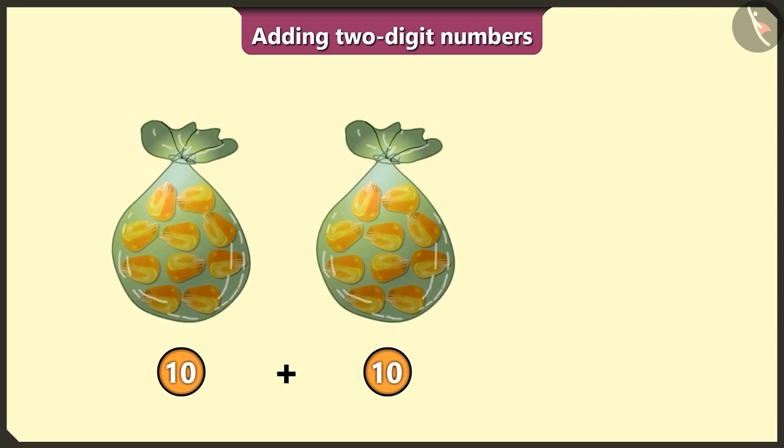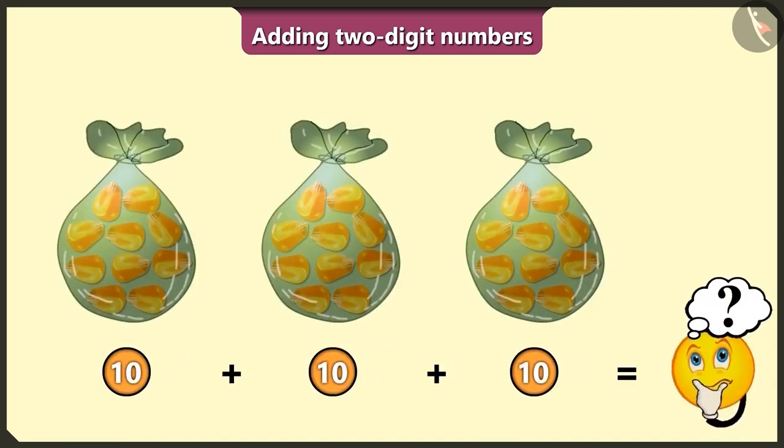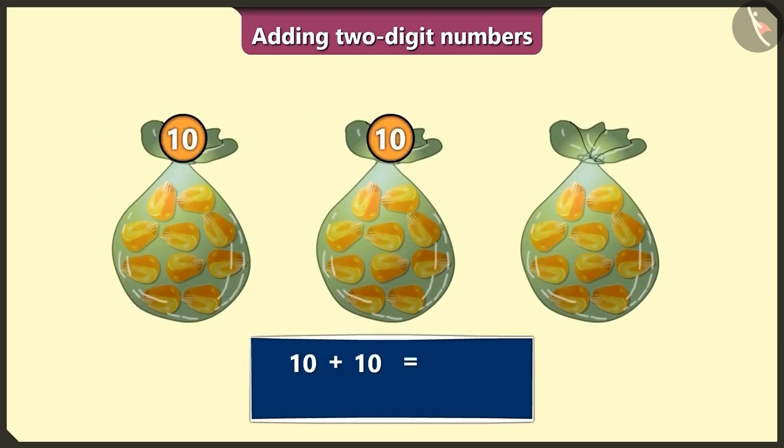If we add another bag of 10 kernels to this, then how many grains are there in total? Here, if we add two tens, it becomes 20. Adding one more tens, we will get a total of 30 grains.